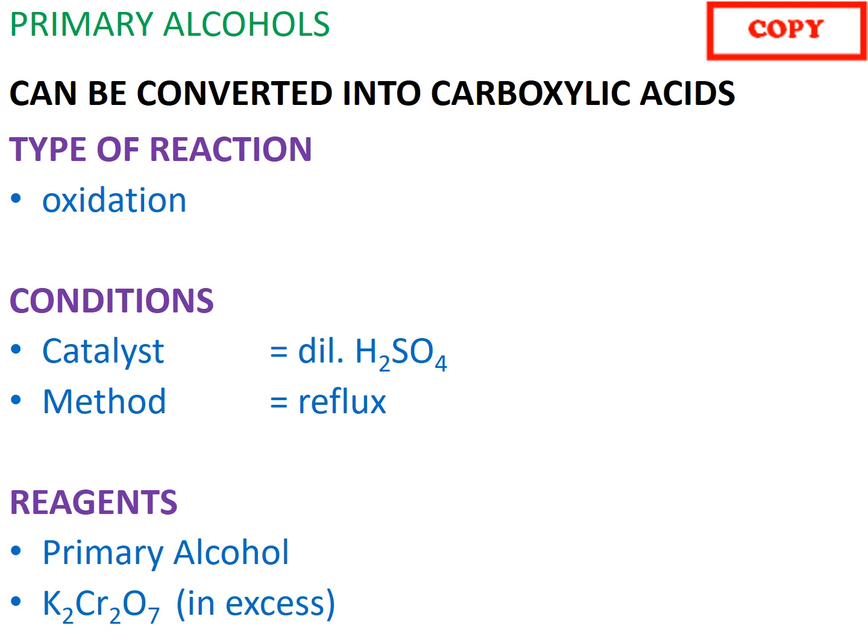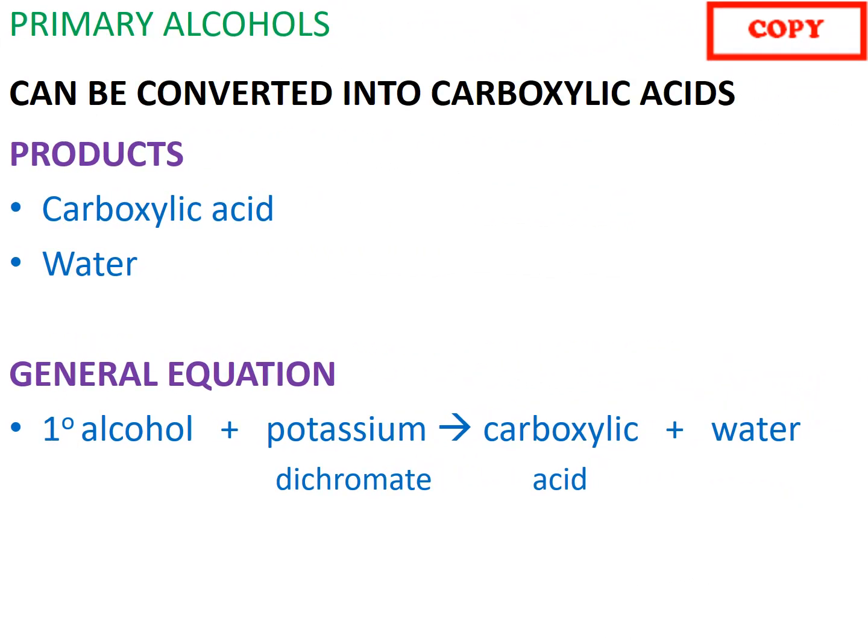Lastly, the conversion of an alcohol into a carboxylic acid is called an oxidation reaction. Carboxylic acid and water are the products that form from the full oxidation of a primary alcohol. The general equation for this reaction is seen below — the alcohol reacts with potassium dichromate to form carboxylic acid and water.